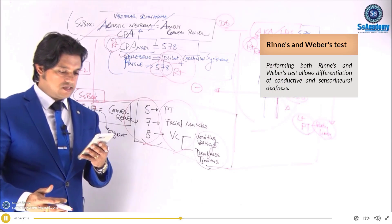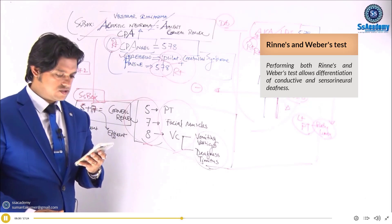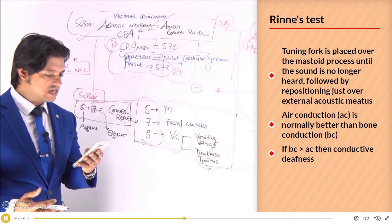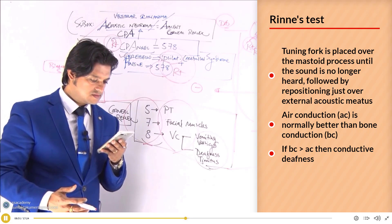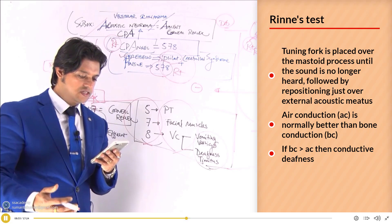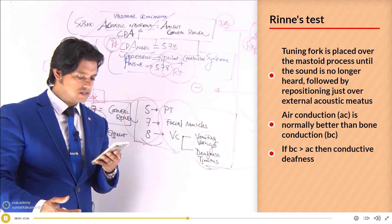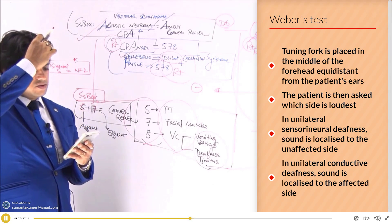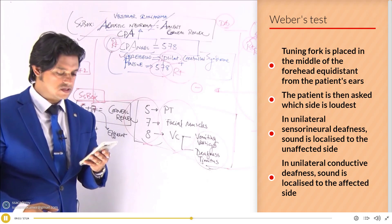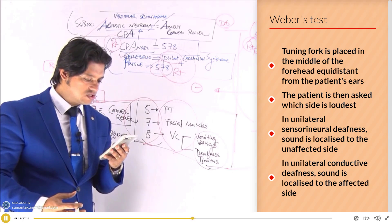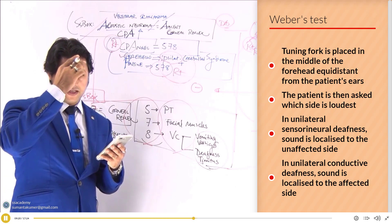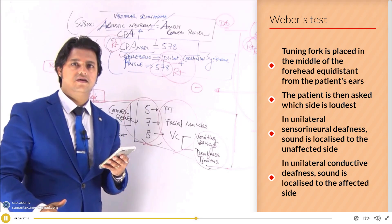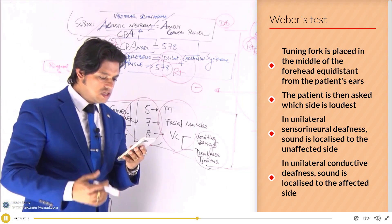Rinne's and Weber tests allow differentiation of conductive and sensorineural hearing loss. In Rinne's test, the tuning fork is placed over the mastoid process until sound is no longer heard, then repositioned just over the external auditory meatus. Air conduction (AC) is normally better than bone conduction (BC). If BC is greater than AC, that is conductive deafness. In the Weber test, the tuning fork is placed at the middle of the forehead. In unilateral sensorineural hearing loss, sound lateralizes to the unaffected side.